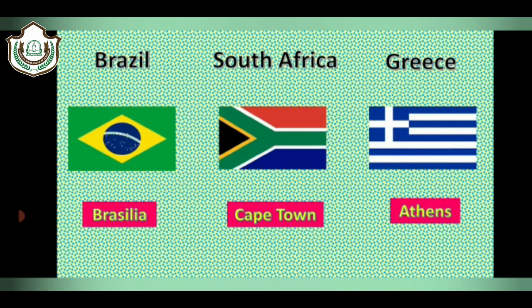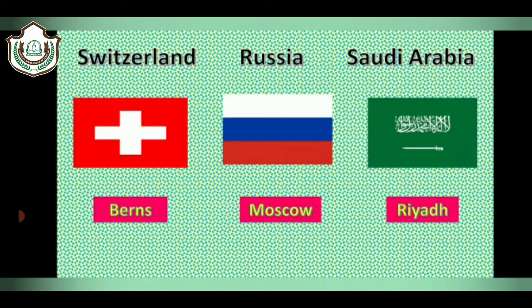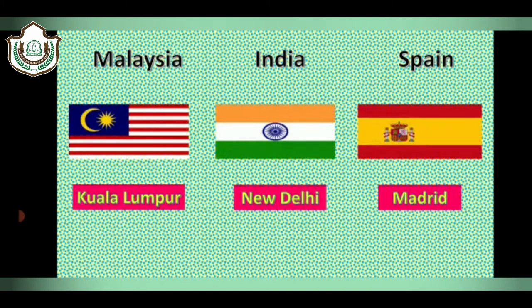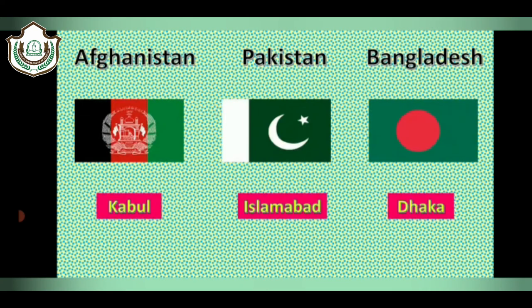Brasília is the capital of Brazil. Cape Town is the capital of South Africa. Athens is the capital of Greece. Bern is the capital of Switzerland. Moscow is the capital of Russia. Riyadh is the capital of Saudi Arabia. Kuala Lumpur is the capital of Malaysia. New Delhi is the capital of India. Madrid is the capital of Spain. Kabul is the capital of Afghanistan. Islamabad is the capital of Pakistan. Dhaka is the capital of Bangladesh.